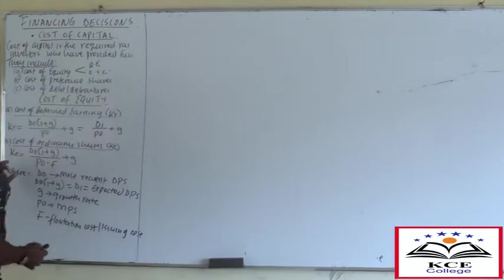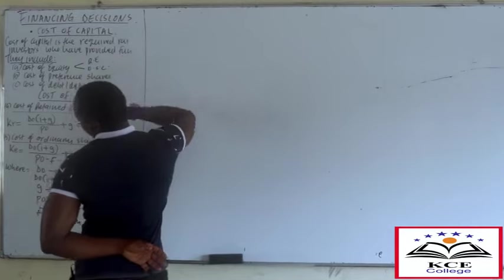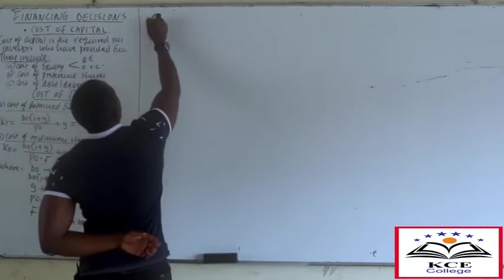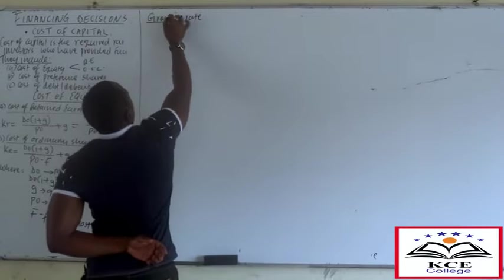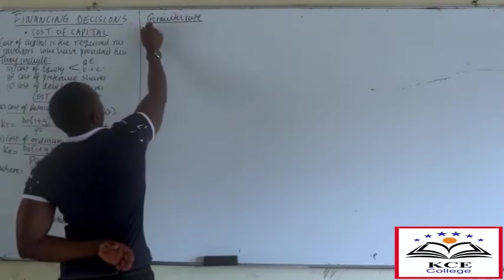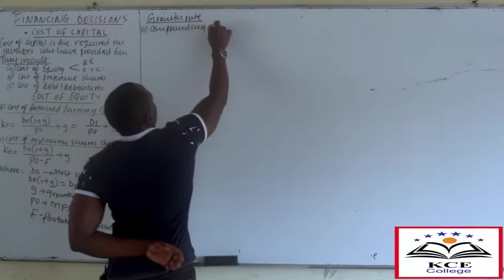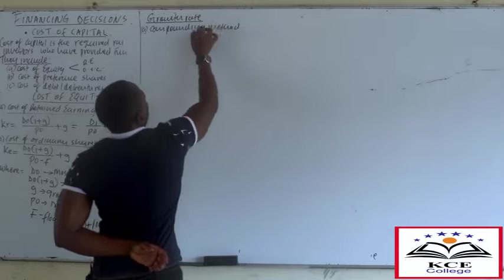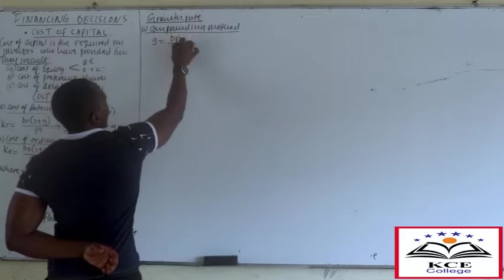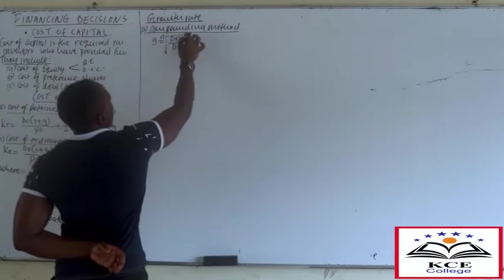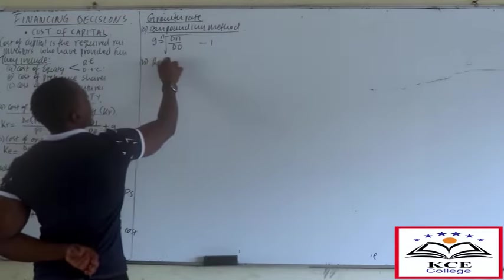Let me explain the growth rate. Sometimes you are not given the growth rate - how do you determine it? You can use two methods. Number one, the compounding method: G = (dN/d0)^(1/n) - 1. Number two, the retention ratio method: G = R × BE, where R is the retention ratio and BE is the return on equity.